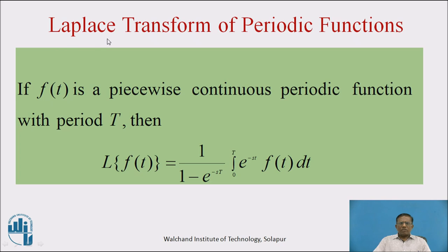Now let us see the statement of Laplace Transform of Periodic Function. If f(t) is a piecewise continuous periodic function with period T, then Laplace Transform of f(t) equals 1 upon (1 minus e raised to minus sT) into the integration with limit 0 to T of e raised to minus st times f(t) dt. Using this formula, we can find Laplace Transform of Periodic Functions.